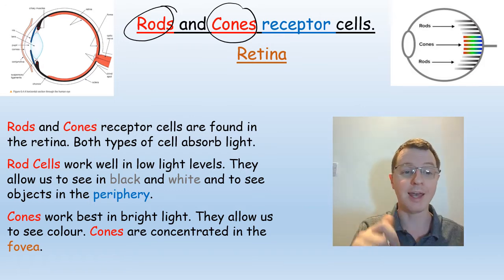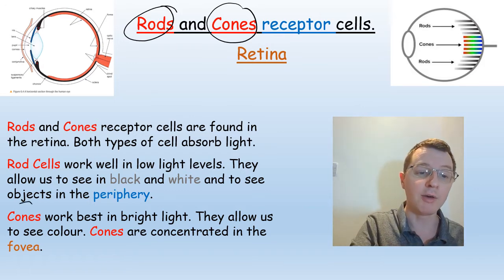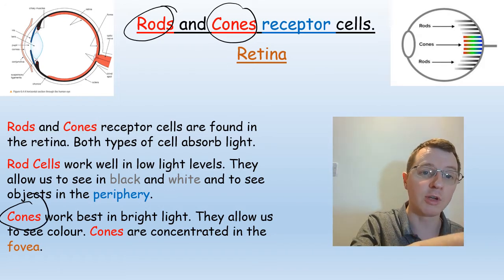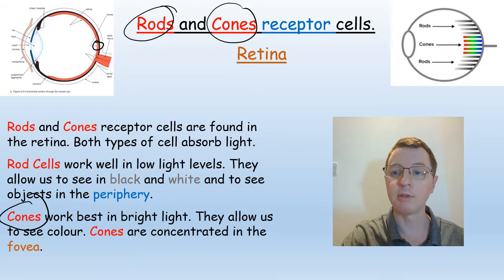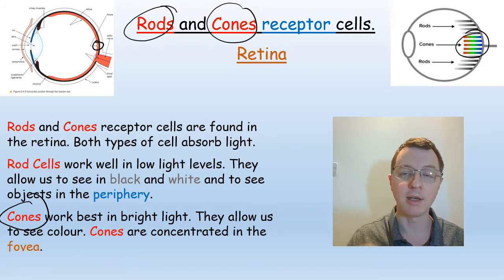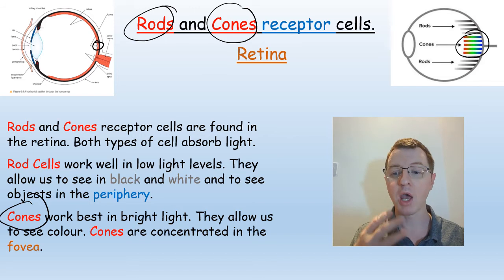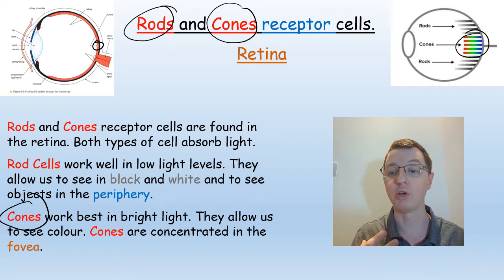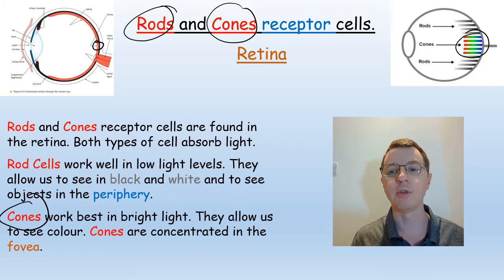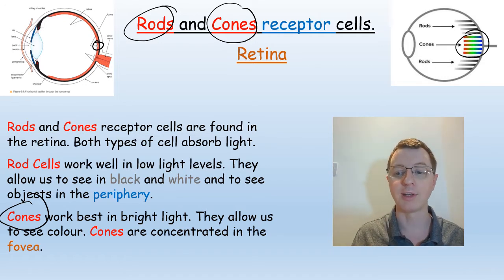When looking straight ahead, you have the cone cells, which are concentrated in the fovea. They allow us to see in colour, absorbing light energy and creating a range of electrical nerve impulses which the brain interprets as colours, so that we can see in more detail when looking straight ahead.